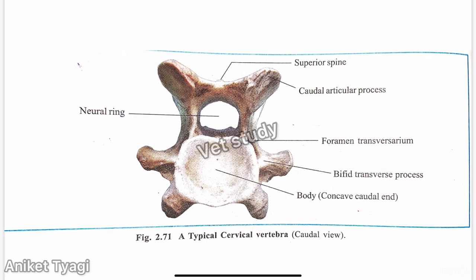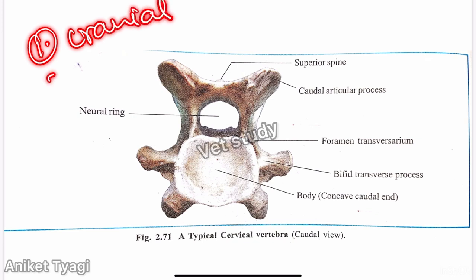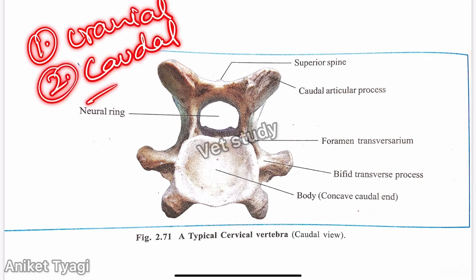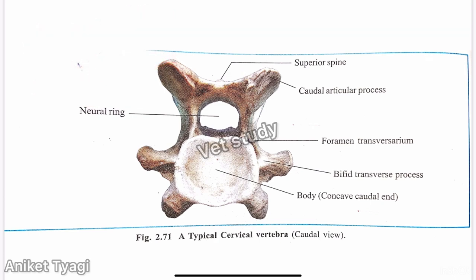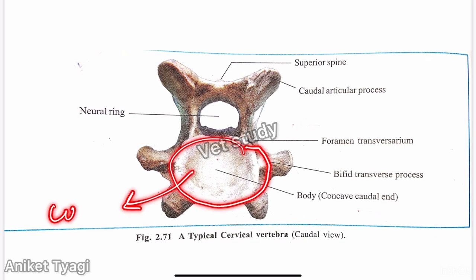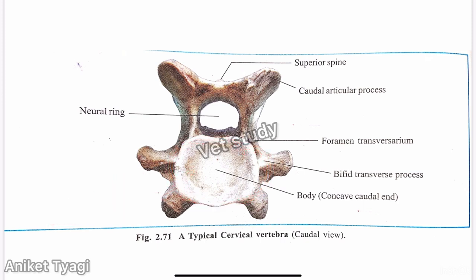There are two types of ends present in the body: cranial and caudal. The caudal end is concave in shape, and the cranial end is convex in shape. These ends are attached to the corresponding intervertebral fibrocartilaginous disc.